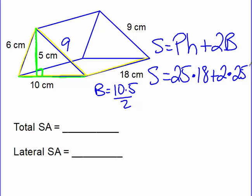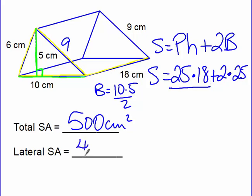So now we just plug it into our calculator: 25 times 18 plus 2 times 25, and we end up with the total surface area of 500 centimeters squared. Now to find our lateral surface area, we just use the front part — perimeter of the base times the distance between the bases. So 25 times 18, we end up with 450 centimeters squared. And that's how you find the surface area of a triangular prism.